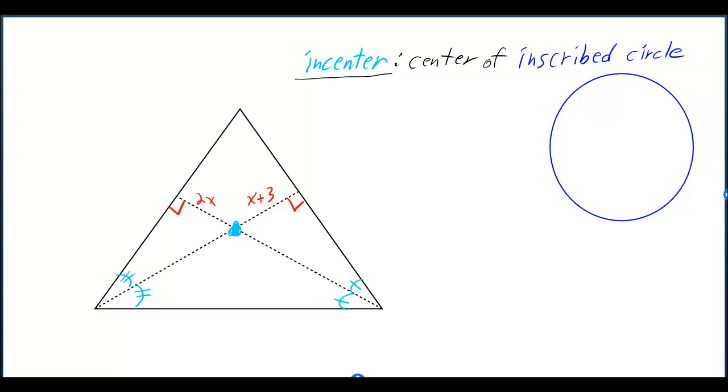We're given a triangle and asked to solve for X. We're given a right angle here and here, which means we have an altitude here and here.